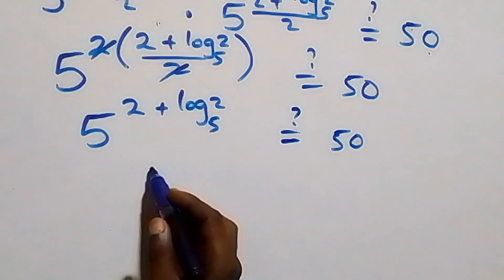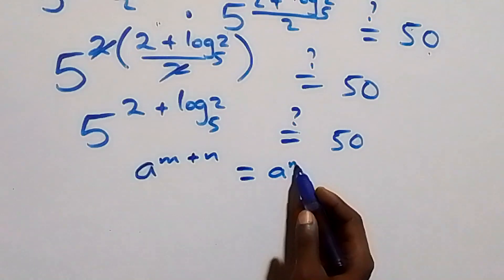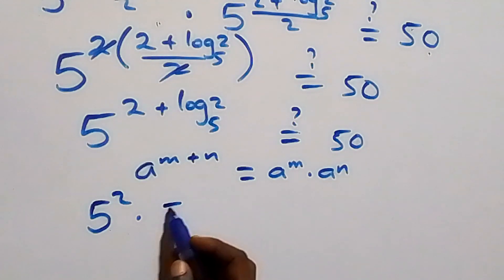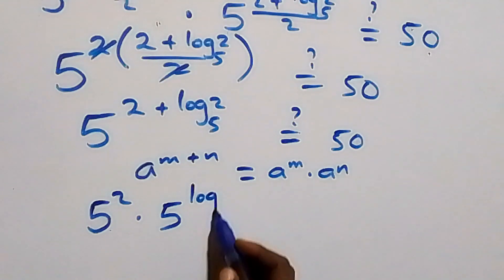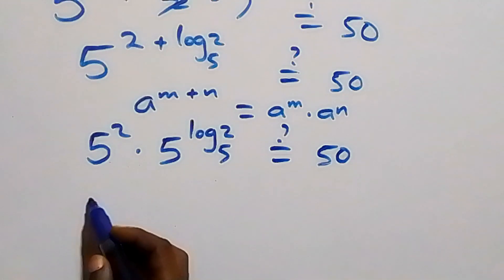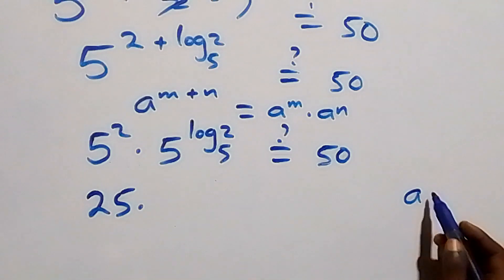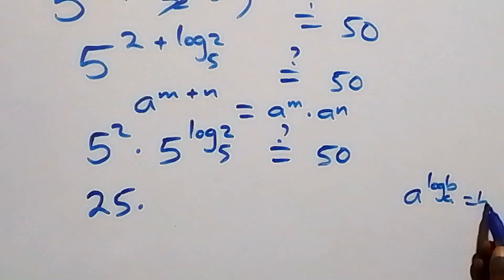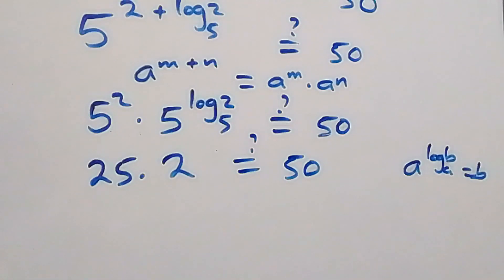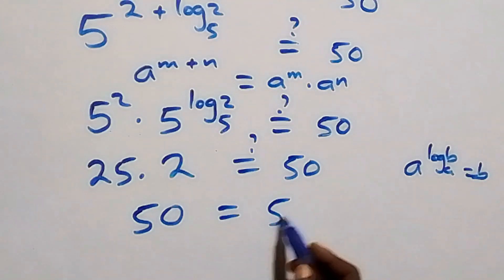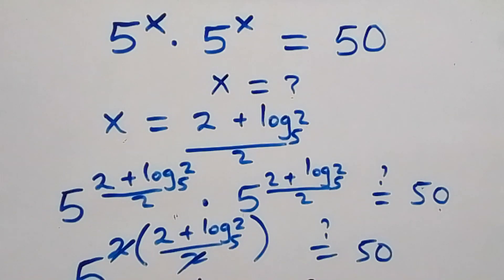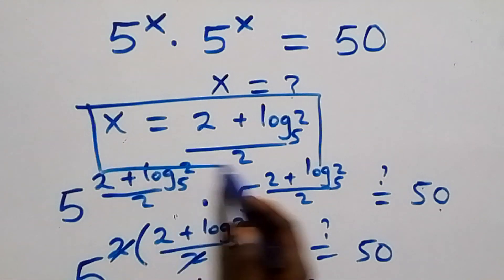Applying the law of indices — a raised to power n times a raised to power n equals a raised to power 2n — we can write this as 5 raised to power 2 times 5 raised to power log₅2. Now 5 squared is 25. And using the identity a raised to power log_a(b) equals b, we have 5 raised to power log₅2 equals 2. So 25 times 2 equals 50, which equals 50 on the right hand side. Left hand side equals right hand side, so x equals (2 plus log₅2) over 2 satisfies the given problem.